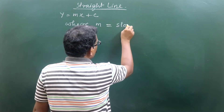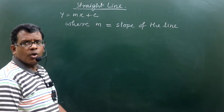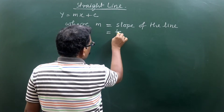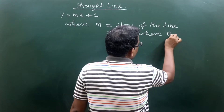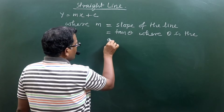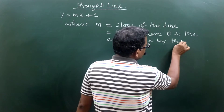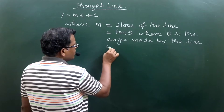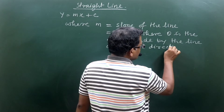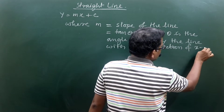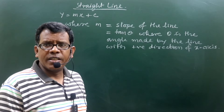m is known as the slope of the line. Slope of the line means it is equal to the numerical value of tan theta, where theta is the angle made by the line with the positive direction of the x-axis.